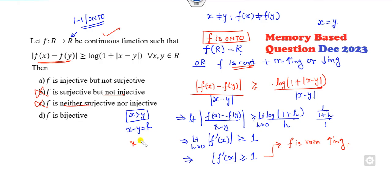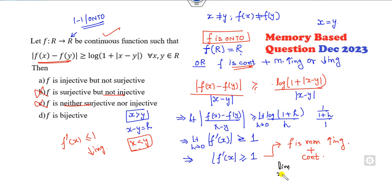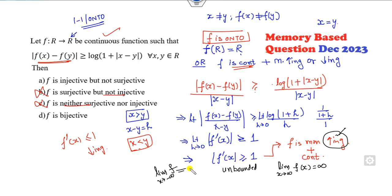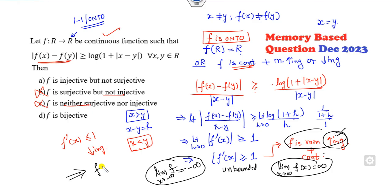Since the derivative F'(X) is greater than or equal to 1, F is monotonically increasing. Since F is continuous and monotonically increasing, and we know it is unbounded, the limit as X approaches infinity of F(X) is infinity, and the limit as X approaches minus infinity of F(X) is minus infinity. Since F is monotonically increasing, continuous, and unbounded, we conclude F(R) equals R.